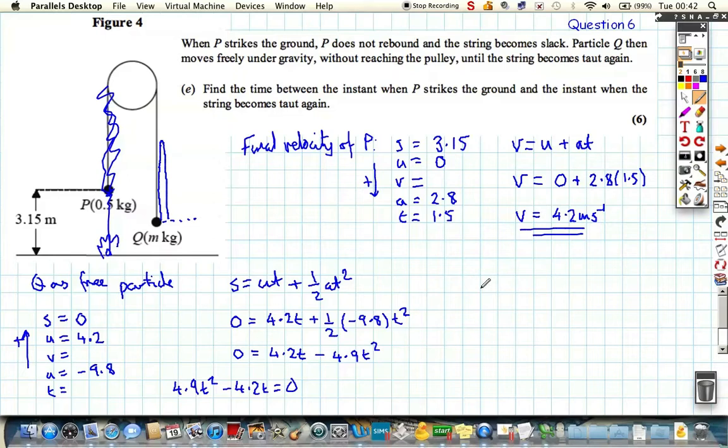We're now going to be able to factor out, it's just like that trick we used earlier in the question. We're going to factorise, we've got unknown in two places. We're going to get T times 4.9T minus 4.2 equals 0. This is solving our quadratic, so we know that one of the solutions is T equals 0 or 4.9T equals 4.2.